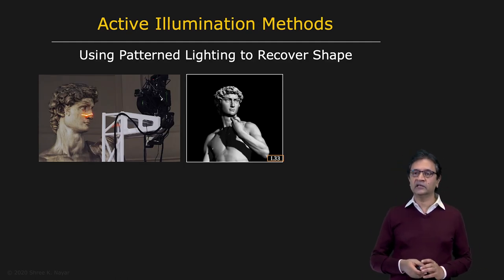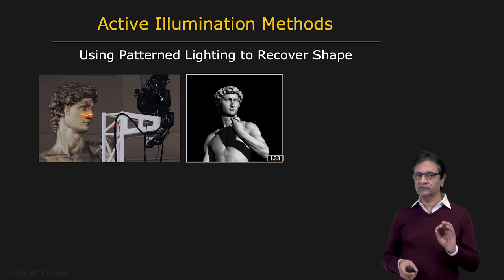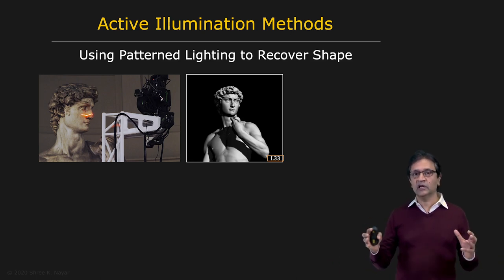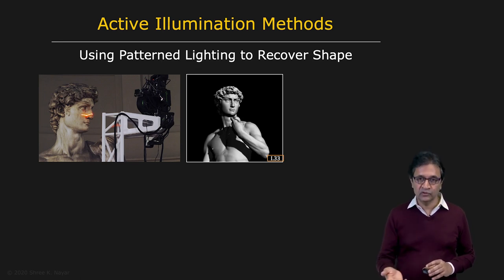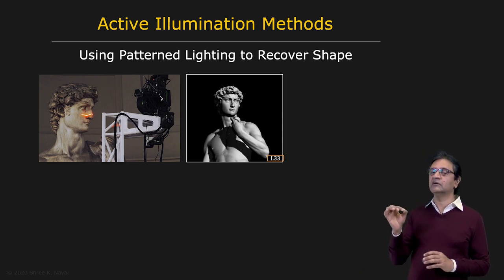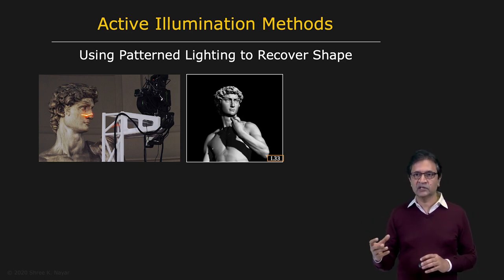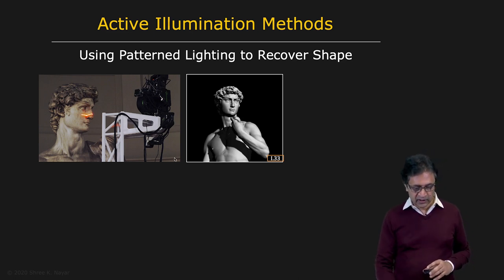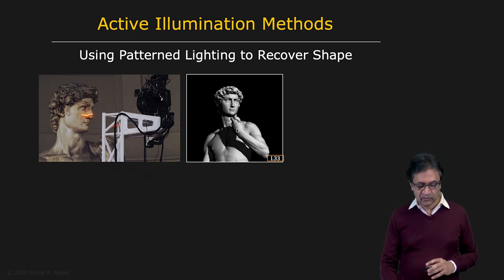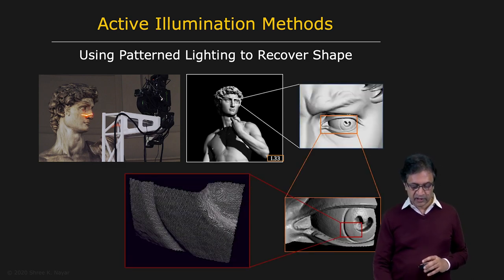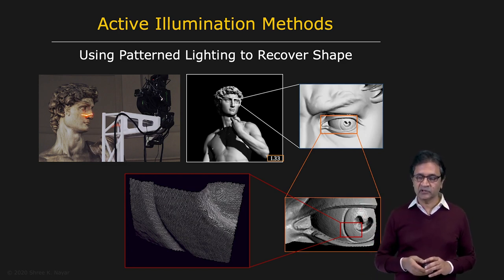Then we're going to talk about active illumination. In order to make vision really robust, whenever possible one should use active illumination. In an assembly line or conveyor belt situation, you can actually control the lighting. When the illumination of a scene can be controlled, you can recover three-dimensional information or material properties of the scene with much greater robustness and accuracy. Here you see Michelangelo's David being scanned using an active illumination technique, producing this very precise 3D model on the right — all the different surface undulations are captured with great fidelity.